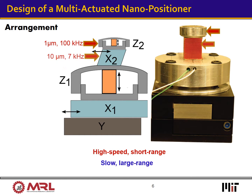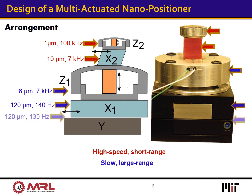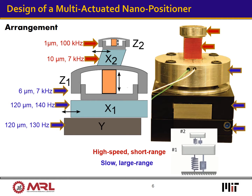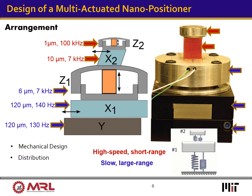To achieve large positioning range and high speed at the same time, we propose a nanopositioner design composed of several actuators — some featuring high speed and short range (denoted in red), others slow but with large kinematic range (denoted in blue). Serial arrangement of multiple nanopositioners, however, leads to dynamic coupling; actuating one positioner will excite the dynamics of other interconnected actuators. This generates additional challenges requiring proper mechanical design, optimal mass distribution in the multi-actuated system, and robust yet tunable control strategies to accommodate system dynamic variations.